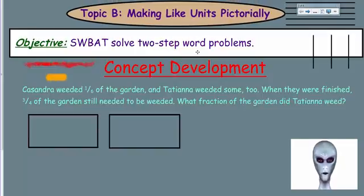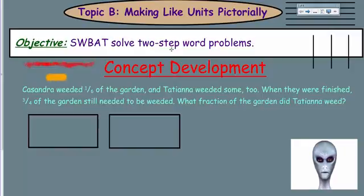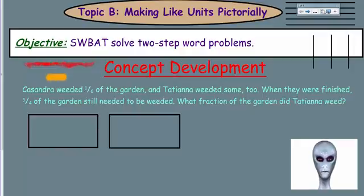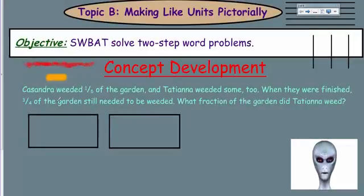We are talking about Topic B — making like units pictorially. This is the last lesson on this topic and we'll have a Part A and Part B; this is Part A. First things first, let's look at this problem. It says Cassandra weeded one-sixth of the garden, and Tatiana weeded some too. When they were finished, three-quarters of the garden still needed to be weeded. What fraction of the garden did Tatiana weed? We already know Cassandra weeded one-sixth.